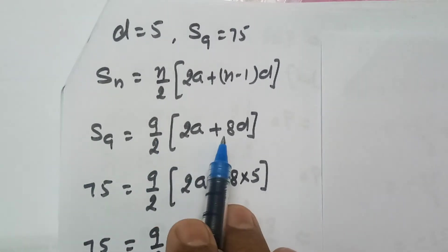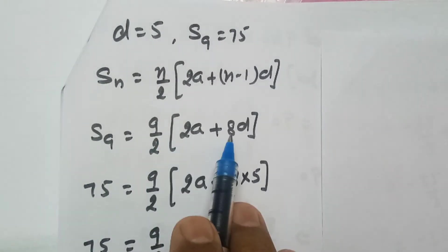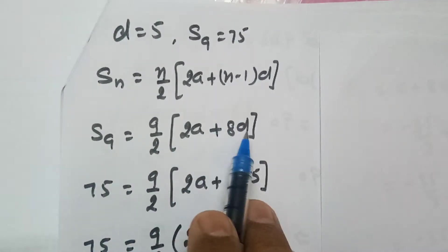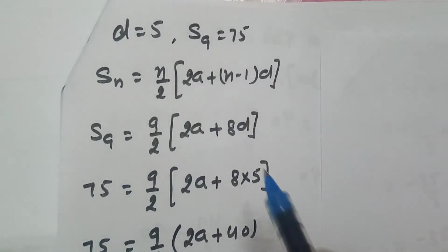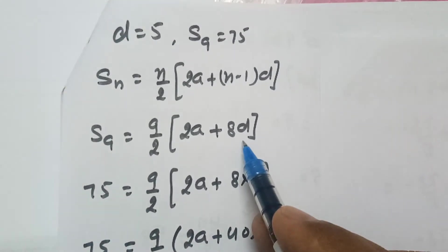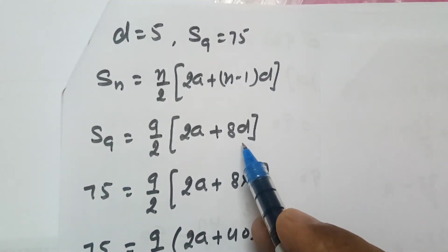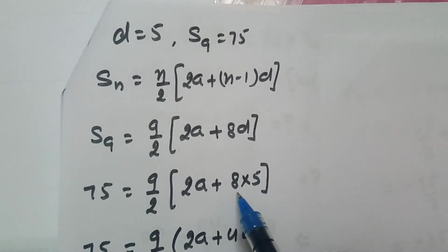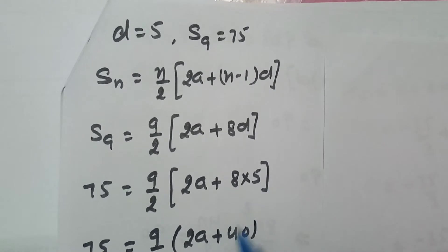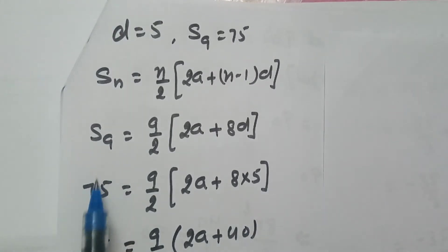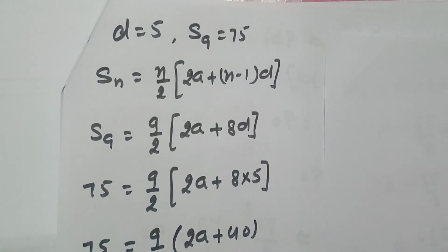Now we substitute the value of d, which is 5. So 8 into 5 equals 40. S₉ is also given as 75.